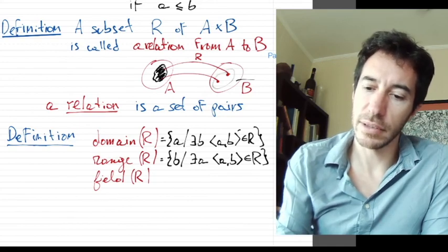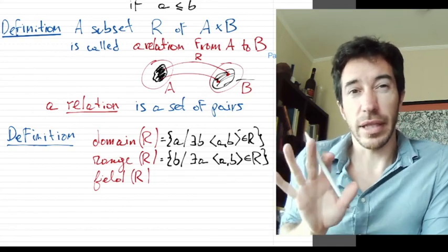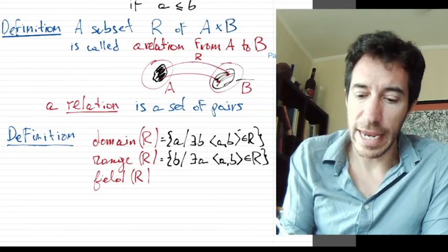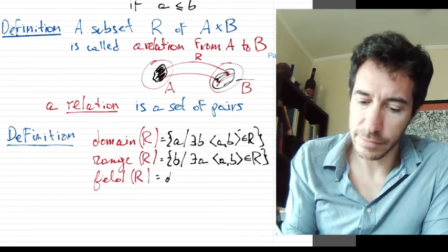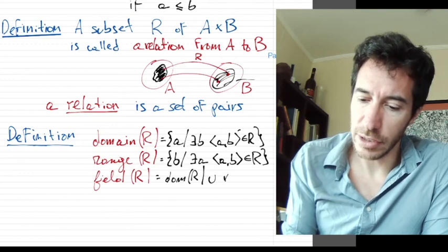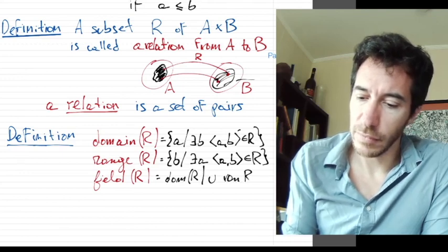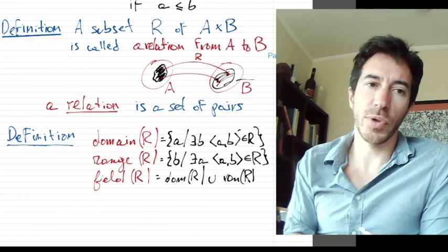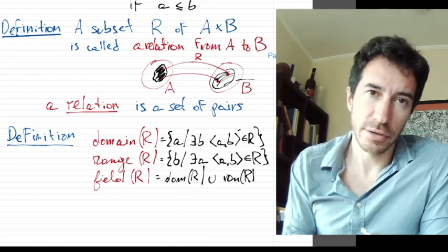And the field is just the domain of the relation union the range. So the union of these two guys is called the field.